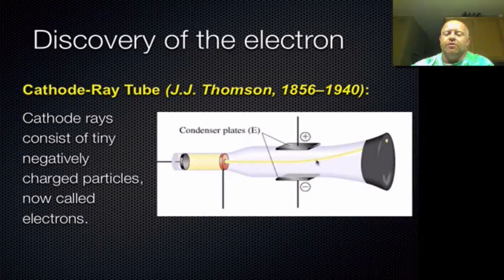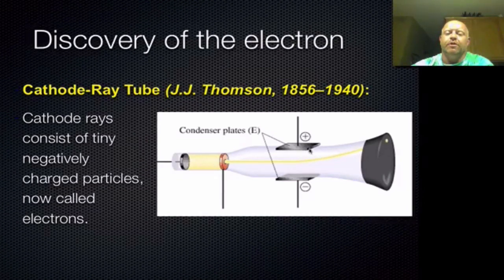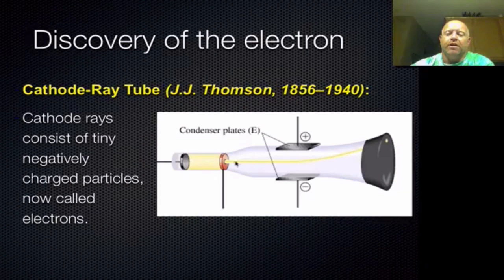That charge would then bend the beam in certain directions. Using very precise and repeated measurements, he was able to determine the power of his charge versus the bend of the beam, and he actually was able to pick up a mass that was less than that of an atom. So the particle creating this beam was not atoms — it was actually something smaller. And it had a negative charge, so that was the electron.